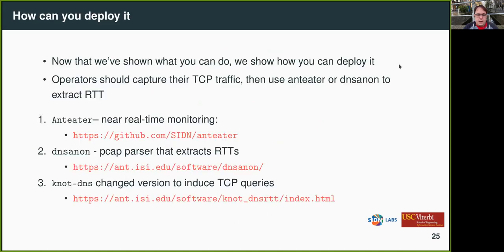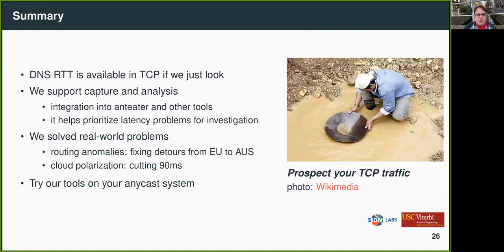So how can you deploy it? Operators that capture traffic should capture their TCP traffic, and they can use our tools to extract RTT. You can also use instrumented DNS to induce more queries. In summary, DNS RTT is available if you just look at it — we support both capture and analysis, we've solved real-world problems like cloud polarization and routing anomalies, and I recommend you try our tools on your Anycast network. Thanks.